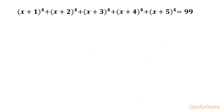Welcome to Infigyan friends. In this video we are going to take up one very interesting quartic equation: (x+1)⁴ + (x+2)⁴ + (x+3)⁴ + (x+4)⁴ + (x+5)⁴ = 99. We have to find out all four solutions. I will use binomial expansion and Pascal triangle method.